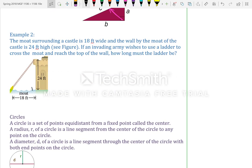The moat surrounding a castle is 18 feet wide, and the wall by the moat of the castle is 24 feet high. There's a figure there. If an invading army wishes to use a ladder to cross the moat and reach the top of the wall, how long must the ladder be? So, we know we're working with a triangle, and we're trying to find a missing side. We're trying to find how long the ladder should be.